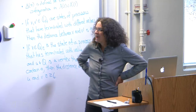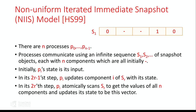In the NIIS model, there are n processes p_0 to p_{n-1}, communicating using an infinite sequence of snapshot objects. Each snapshot object has n components, all initially bottom. Process i can update component i and perform a scan returning all components atomically. Initially, p_i's state is its input. In its first step, p_i updates component i of S_1 with its state, then scans to get all n component values and updates its state to that vector.